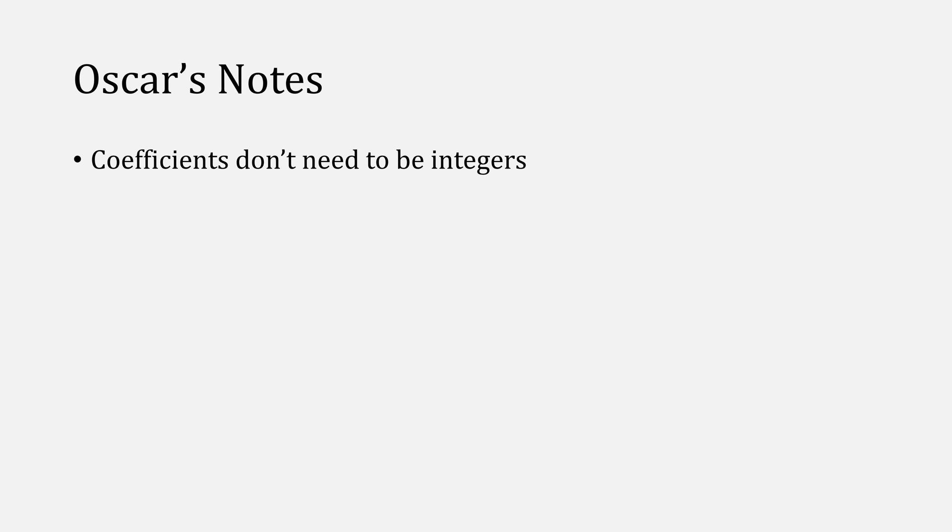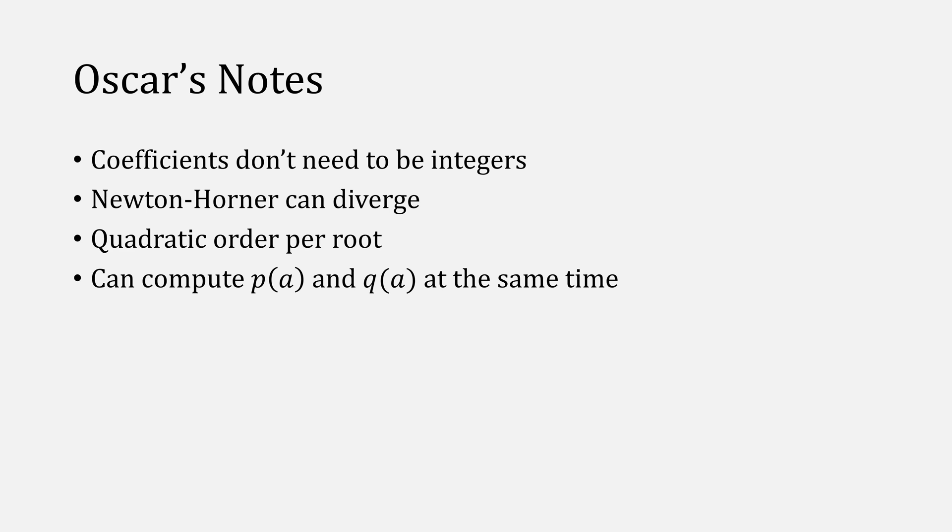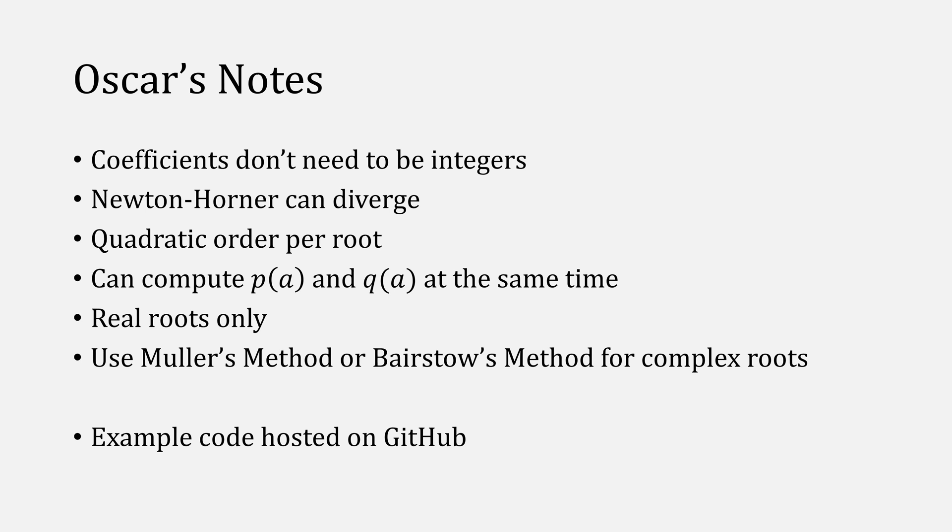Some things to keep in mind. The coefficients that you're using don't have to be integers. They were just so for our test cases. And also Newton's method can still diverge, but you get quadratic convergence every time you find a root. You also can compute p of a and q of a at the same time for efficiency. And this method will only find real roots. If you need complex roots, you can use Muller's method or Bairstow's method. And the code that I used will be hosted on GitHub.